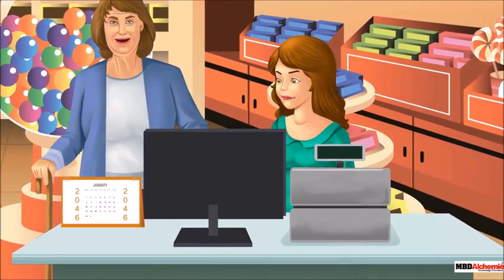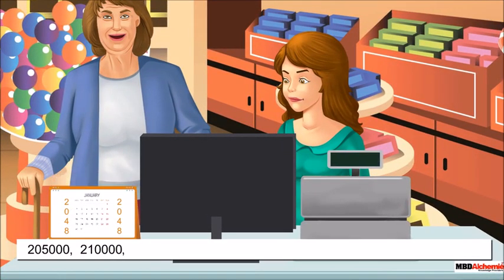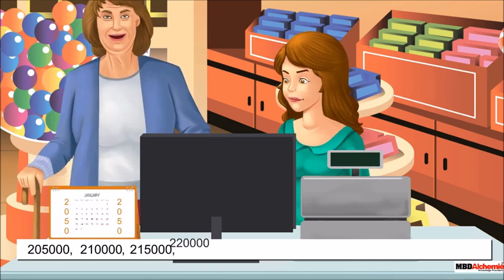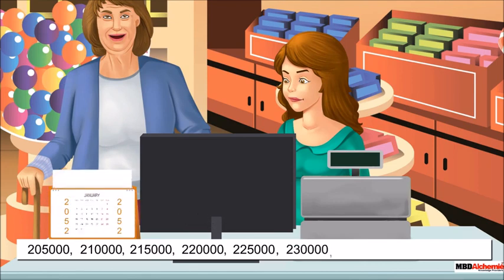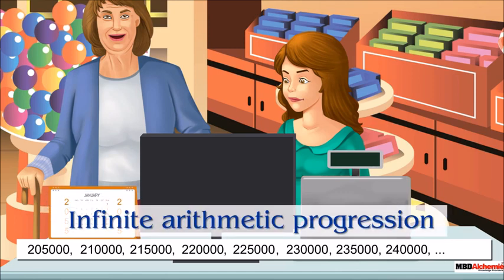After retirement, she handed over the business to the following generation and asks them to increase the investment in the same manner, and then next generation and then next generation. If this keeps on going like this and never stops, we can't say how many terms will be there. Such progressions with infinite terms are called infinite arithmetic progressions.